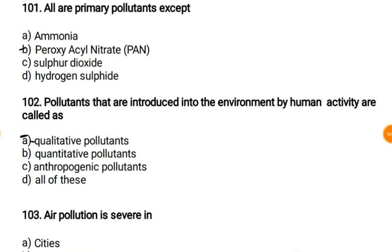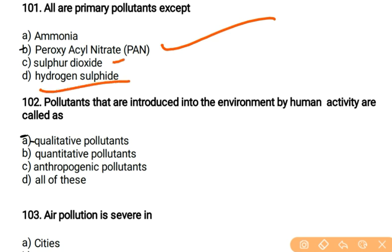First question: all are primary pollutants except peroxyacyl nitrate. Peroxyacyl nitrate is not a primary pollutant — it is a secondary pollutant. Ammonia, sulfur dioxide, and hydrogen sulfide are primary pollutants. So peroxyacyl nitrate is a secondary pollutant.